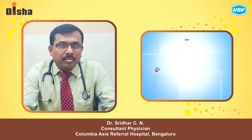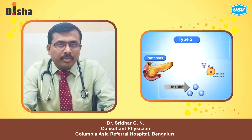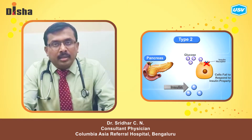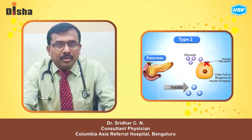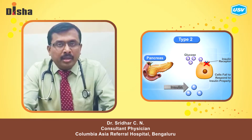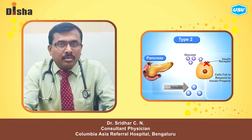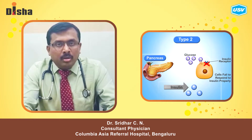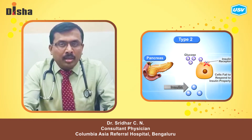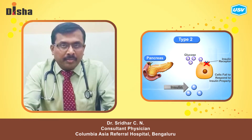The problem here is that utilization of insulin doesn't happen at the cells at the periphery. They can have normal insulin production, but the utilization of this insulin at the cells will have some defect. So there could be normal or sometimes even more insulin, but the utilization is not happening.